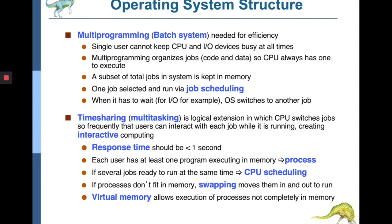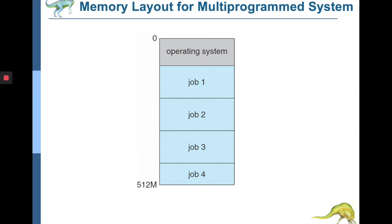If processes do not fit into the limited RAM, we perform swapping to move processes in and out of memory. If we are still unable to fit all operations in memory, there is a concept of virtual memory that logically expands memory by putting some portion of the program into RAM and the rest into virtual memory. A diagram shows jobs filled into RAM with some space occupied by the operating system and a number of jobs stacked in RAM currently under execution.